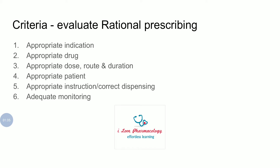There are six criteria used as standards to evaluate rational prescribing. First is appropriate indication — you note down the appropriate indication before selecting a drug. Once the appropriate indication has been determined, you proceed to appropriate drug selection.